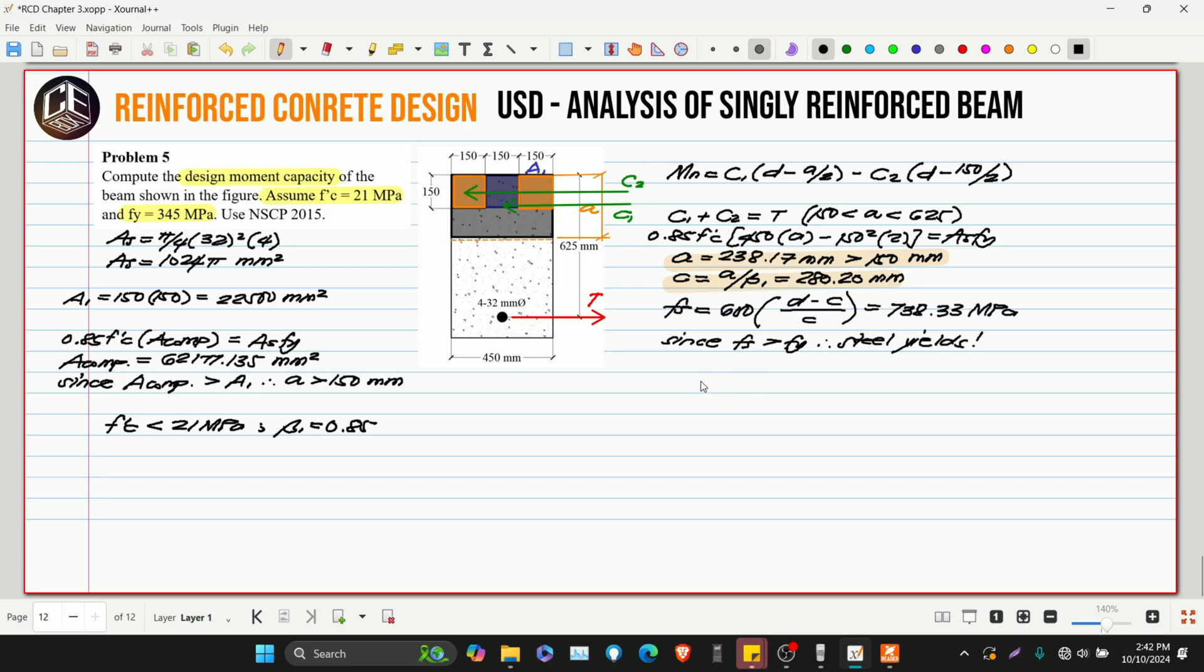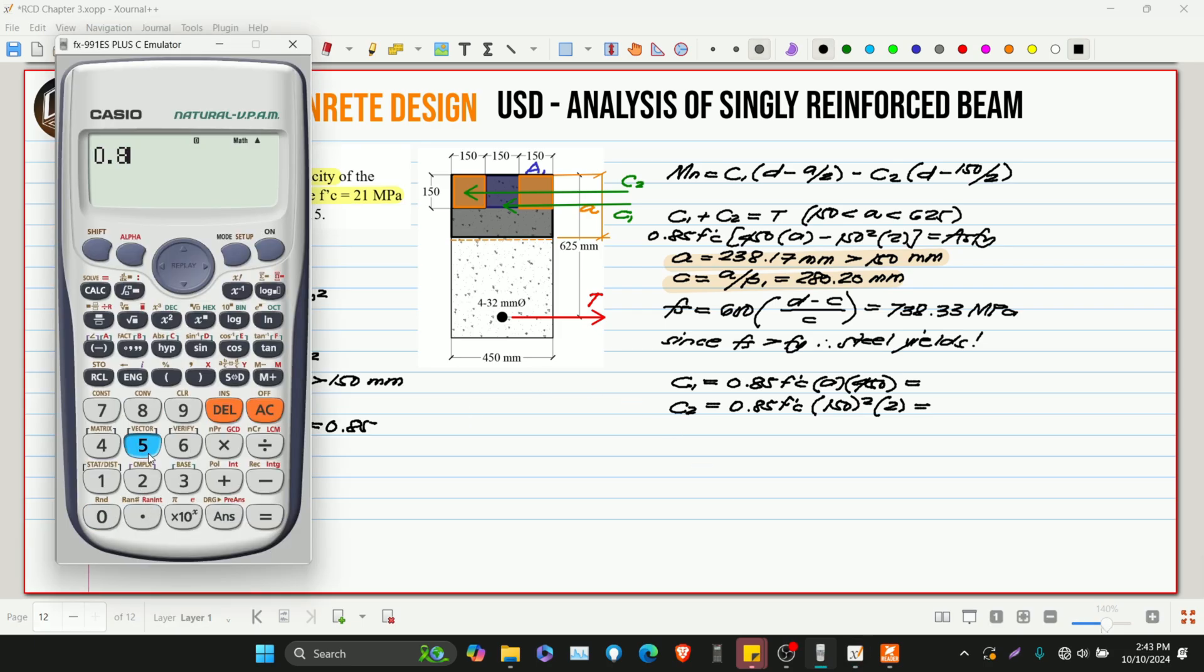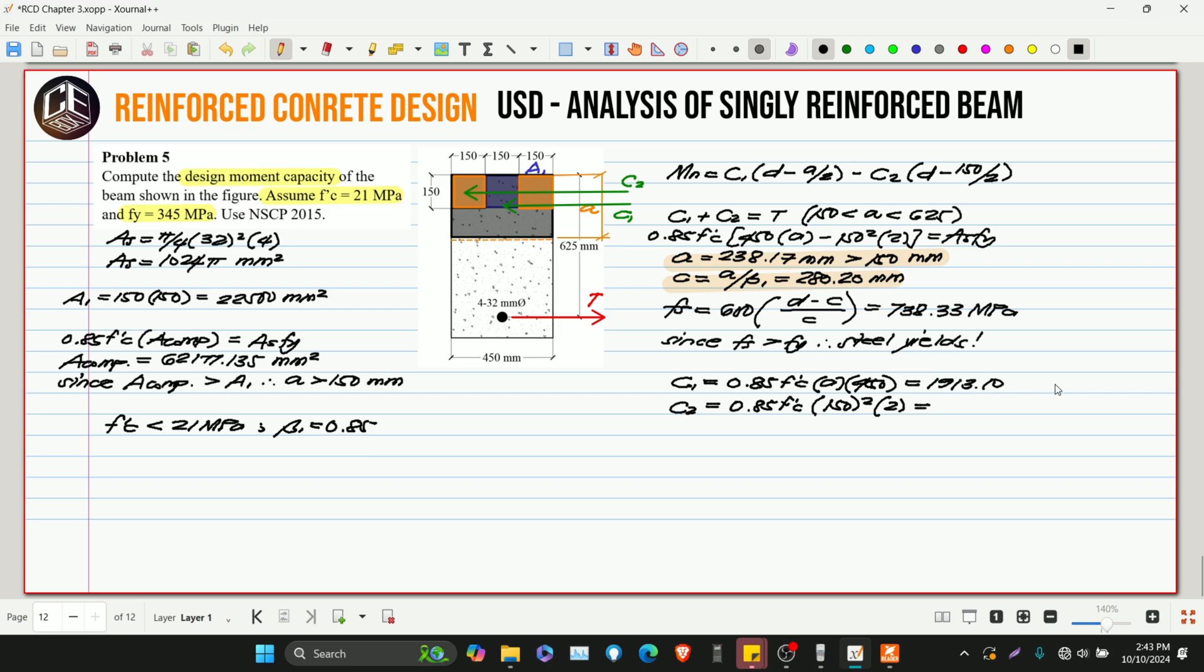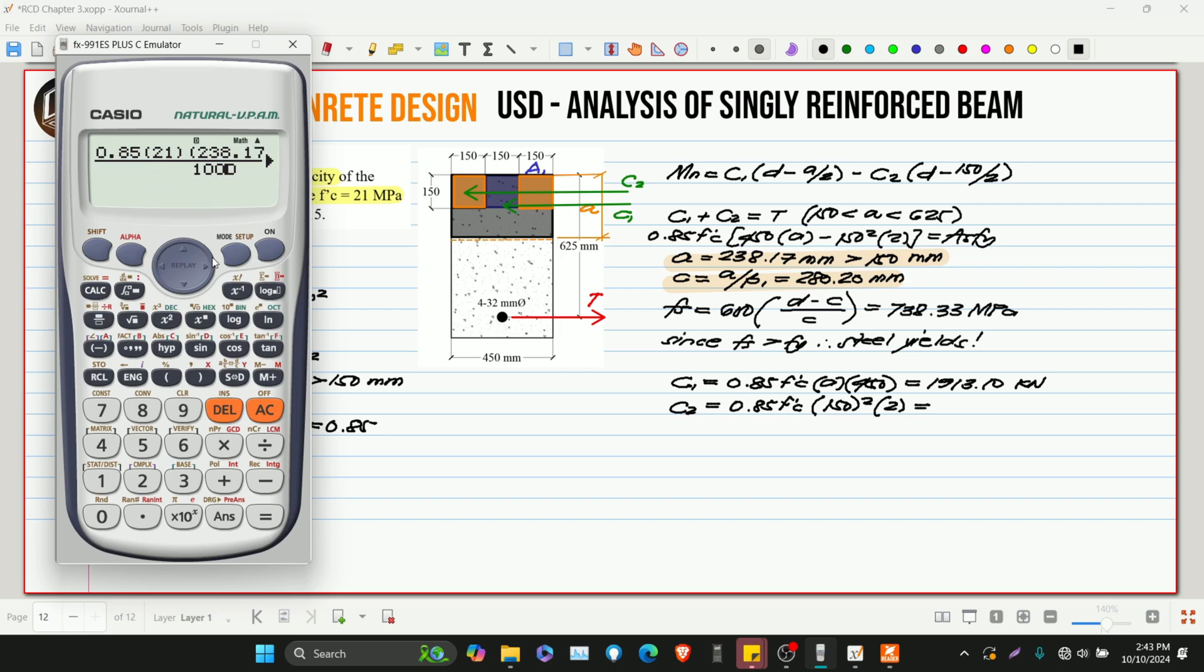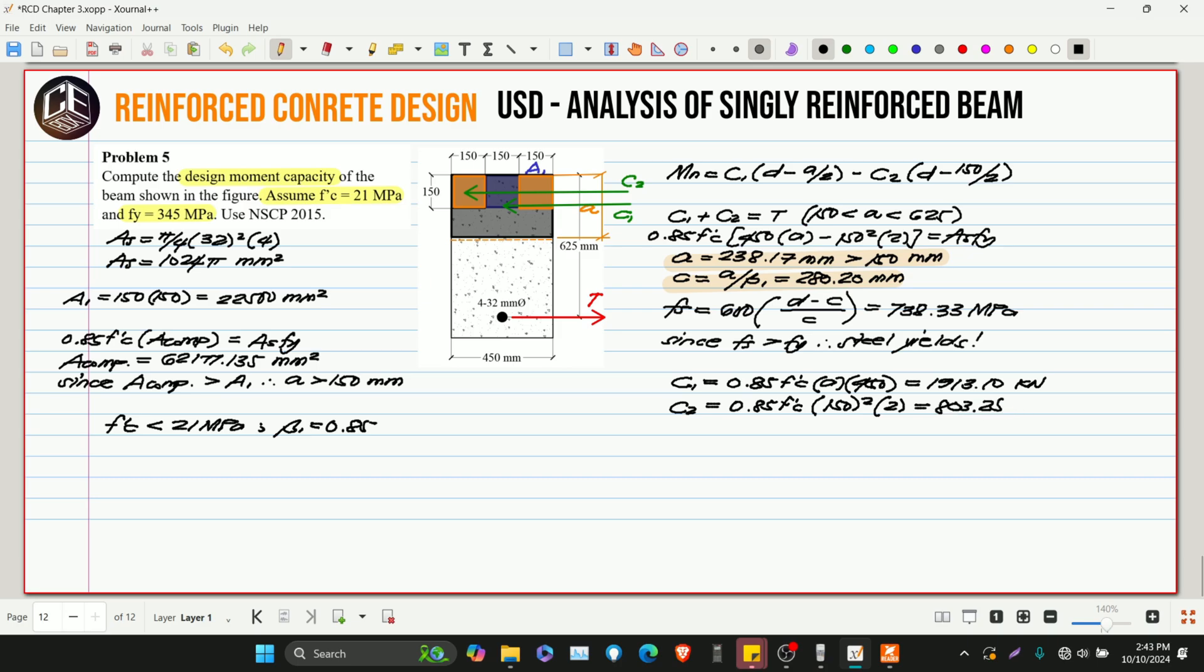Now, we can solve for C1 and C2. C1 is 0.85 F'C multiplied by A multiplied by 450. This is 0.85 F'C multiplied by area 150 squared multiplied by 2. So, divide by 1,000. So, 1913.10 kilo Newton. This is 803.25.